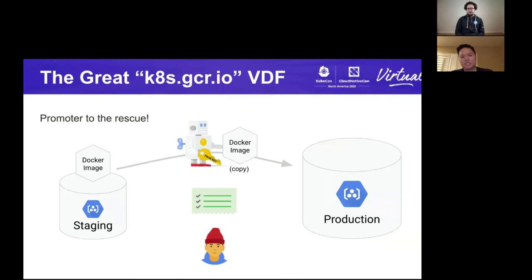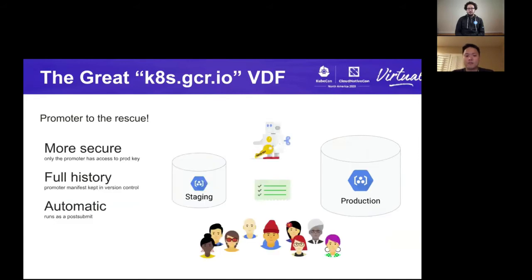So we basically had a bot that holds the keys to production. Humans weren't allowed to individually make changes to production, and because of that it made things more secure. The history of changes to production was auditable because all changes were done in source code — configuration as code. We also had pre-submit checks for any new changes going into the promoter manifest, to guard against human error and to check that the images are okay.